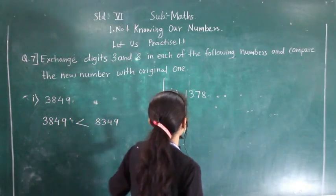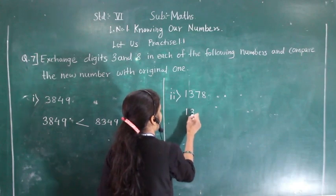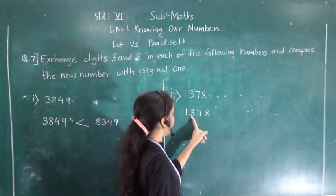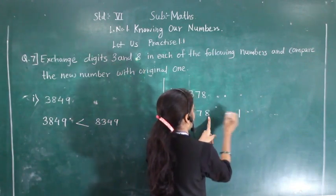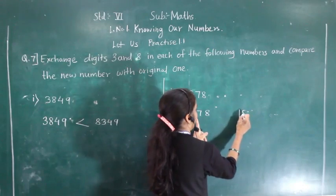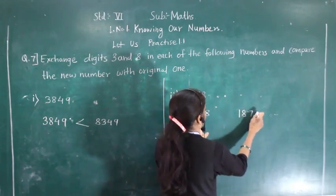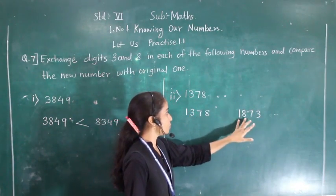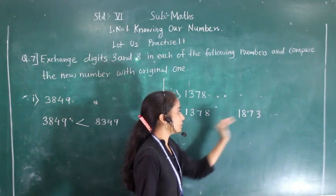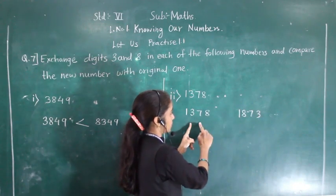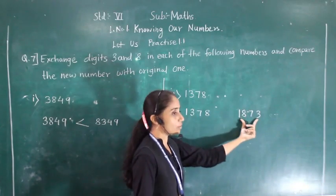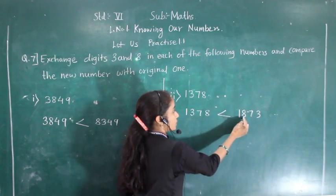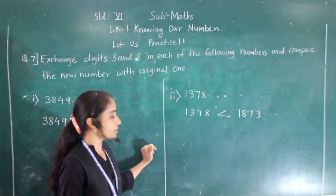Next number is 1370. We exchange digits 3 and 8: so the new number becomes 1873. Comparing this new number with the original 1370, we find that 1873 is the greater number.